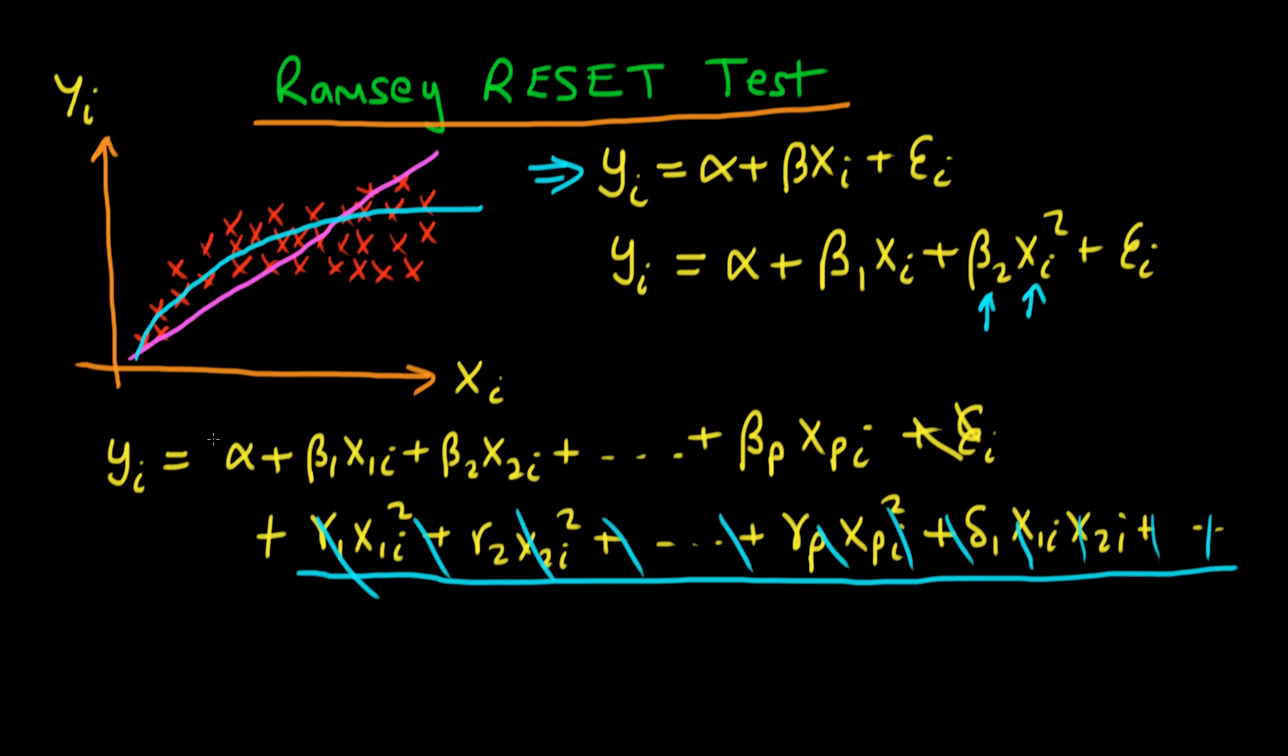So the way in which he thought about doing this test was to run this original regression. So that's just a linear one, so we're forgetting about all these terms down here, and then to get the fitted values from that regression. So to get the individual alpha hat, beta 1 hat, beta 2 hat, and beta p hat, where the hats here indicate the actual values which have been outputted from OLS regression.